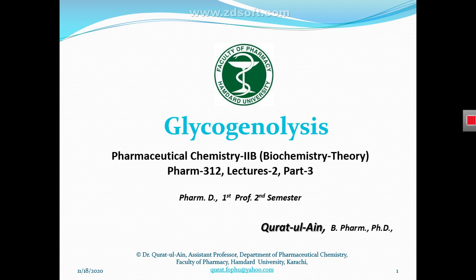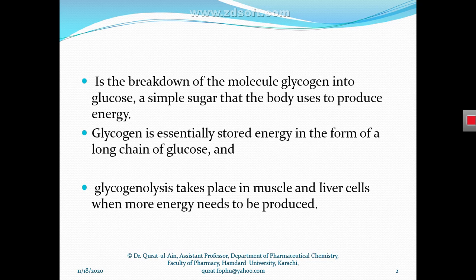Whenever we need energy, the body breaks down glycogen — which is a collection of glucose molecules. Whenever our body needs glucose or energy, glucose is released from this glycogen. This process is called glycogenolysis: glycogenolysis means the breakdown of glycogen to release energy in the form of sugar.